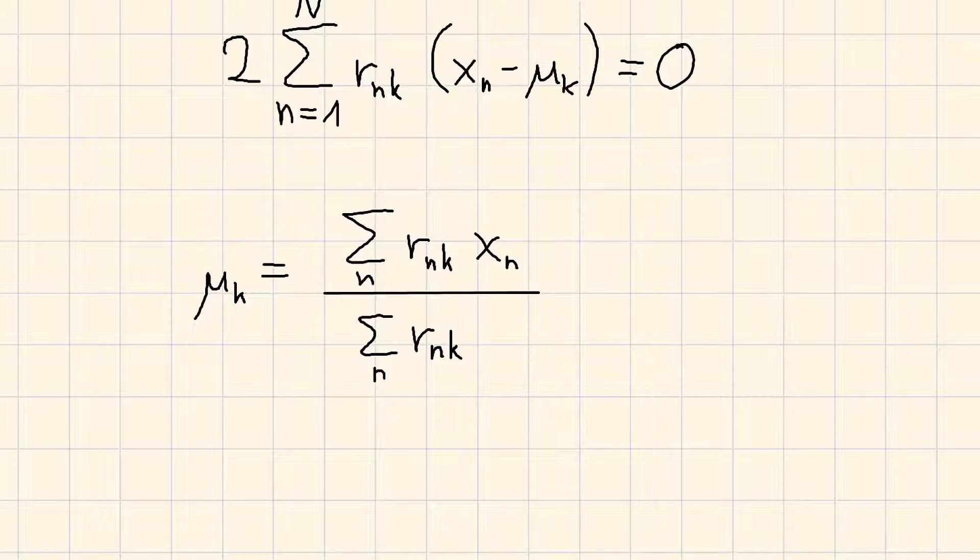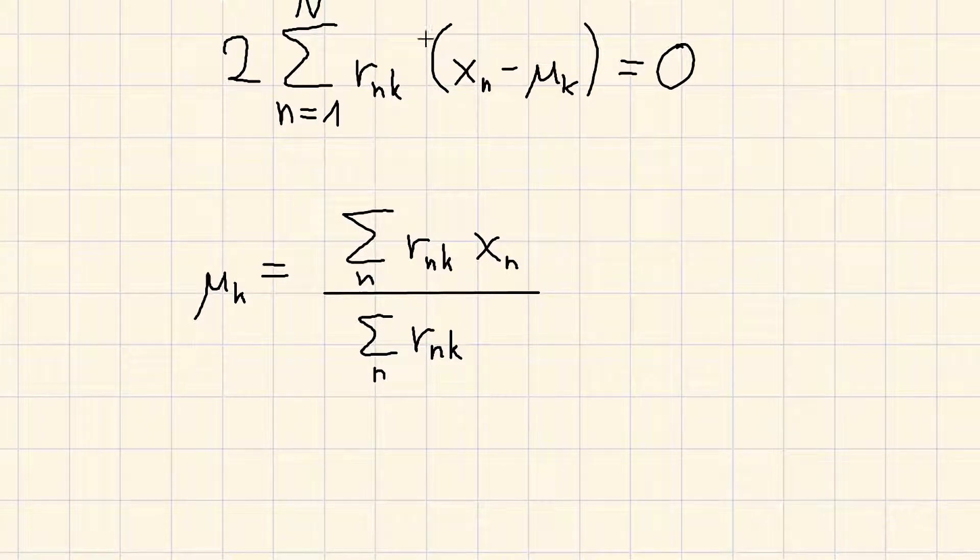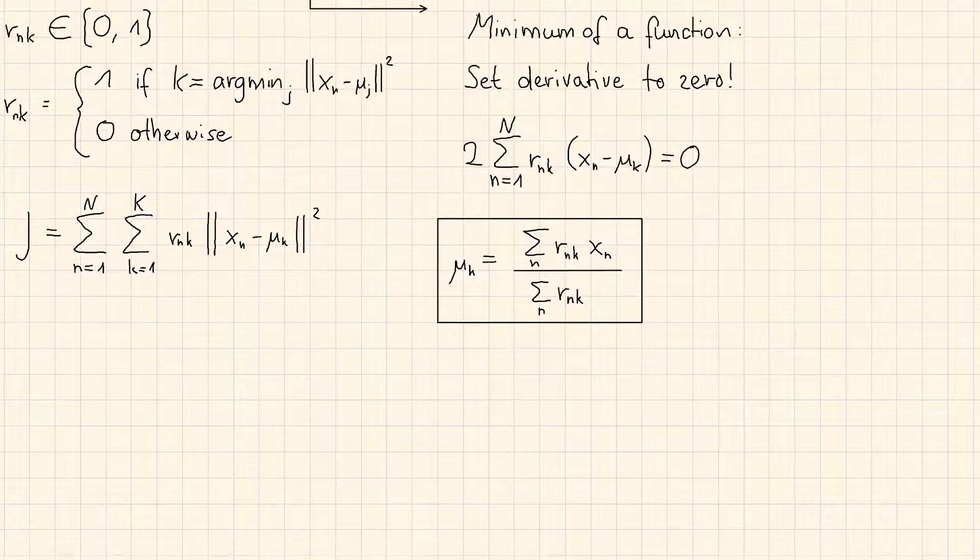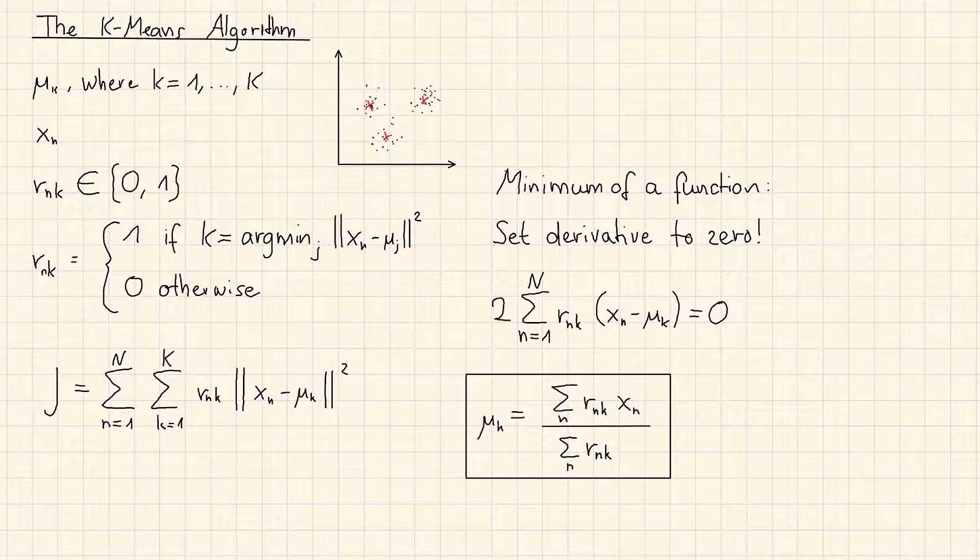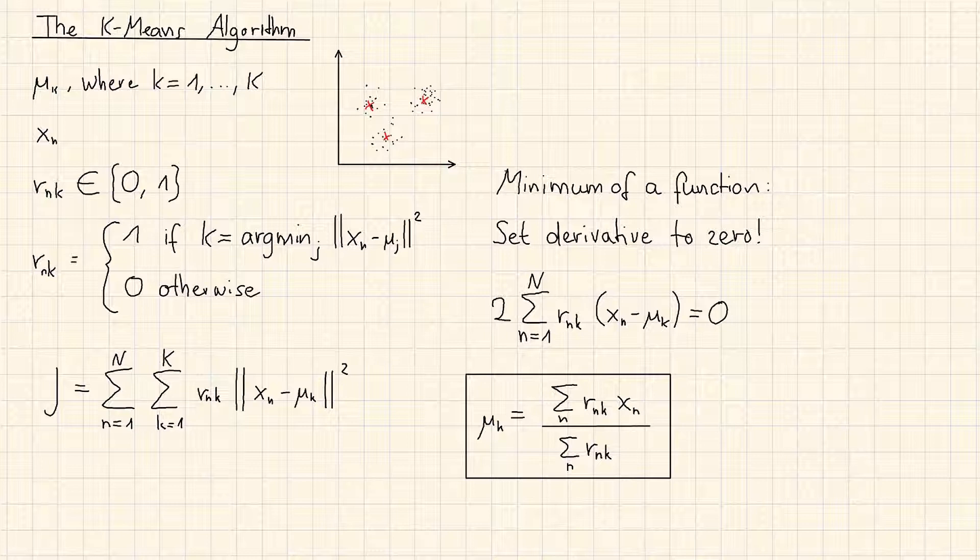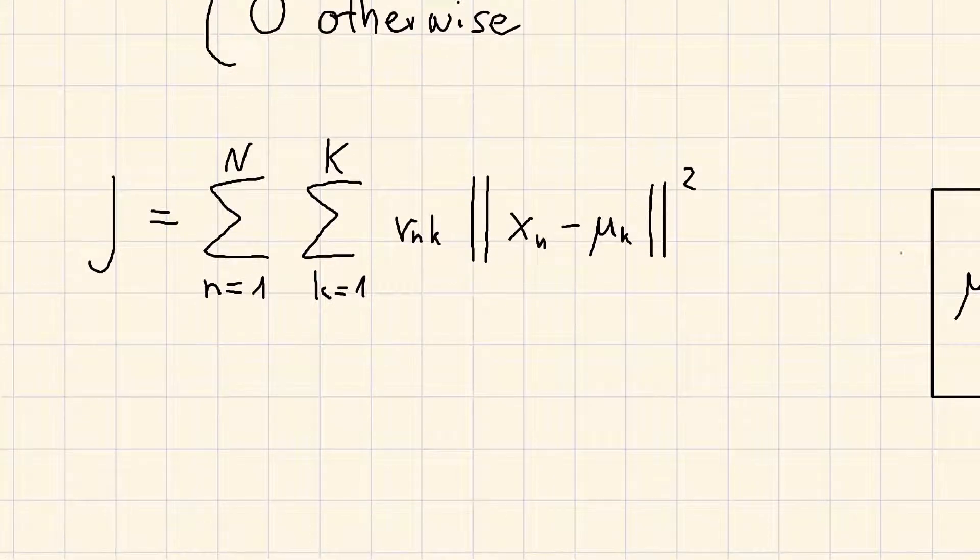That's it. This is our update rule for the means, because the denominator in this expression is equal to the number of points assigned to cluster k. That is everything we need to implement this standard form of the k-means algorithm.